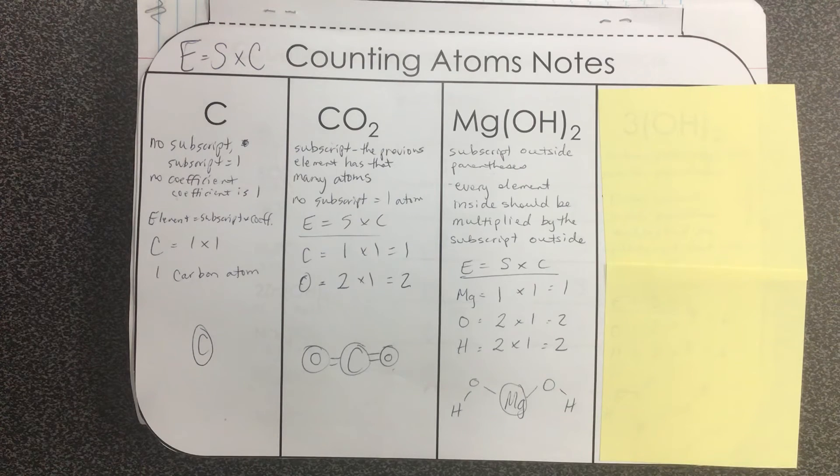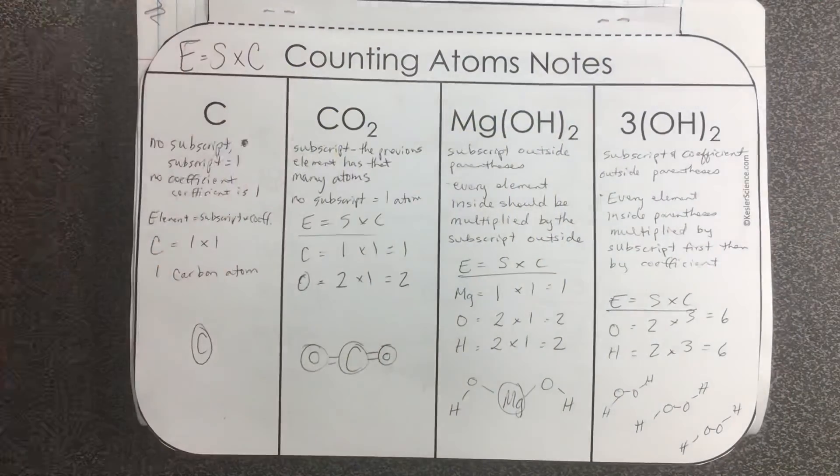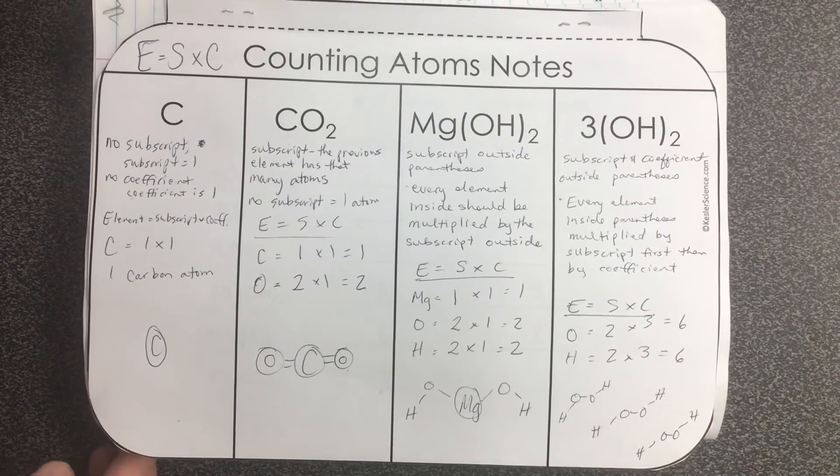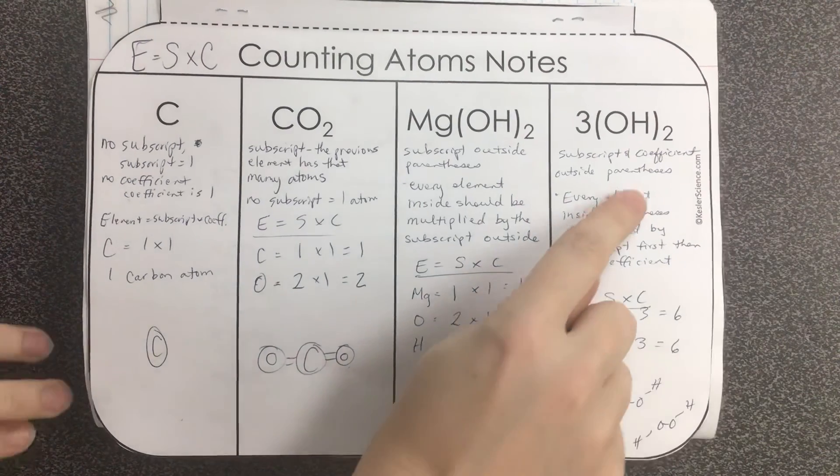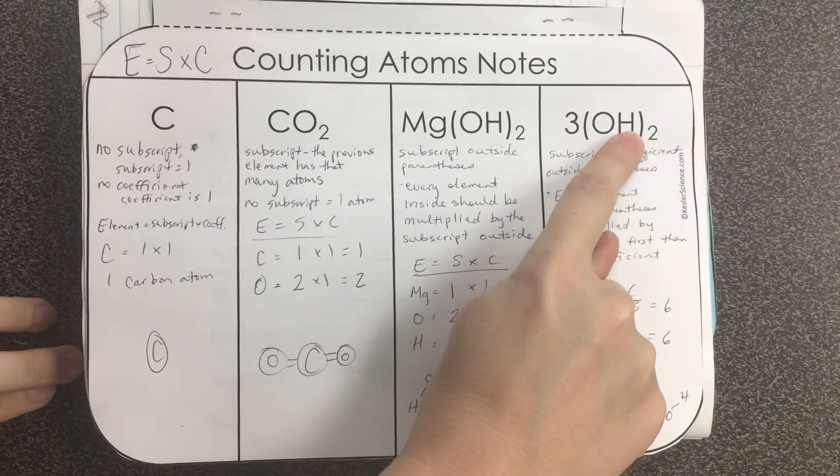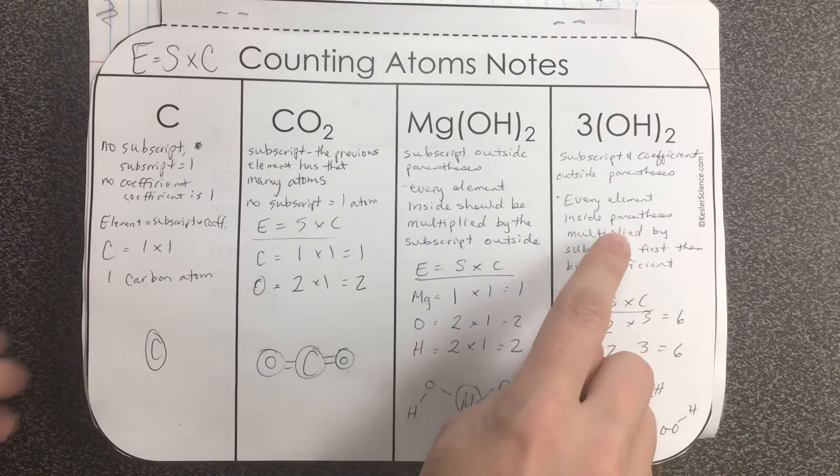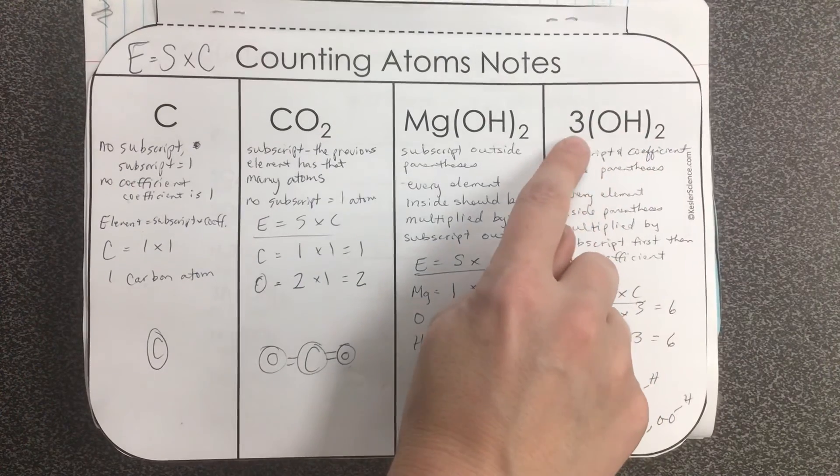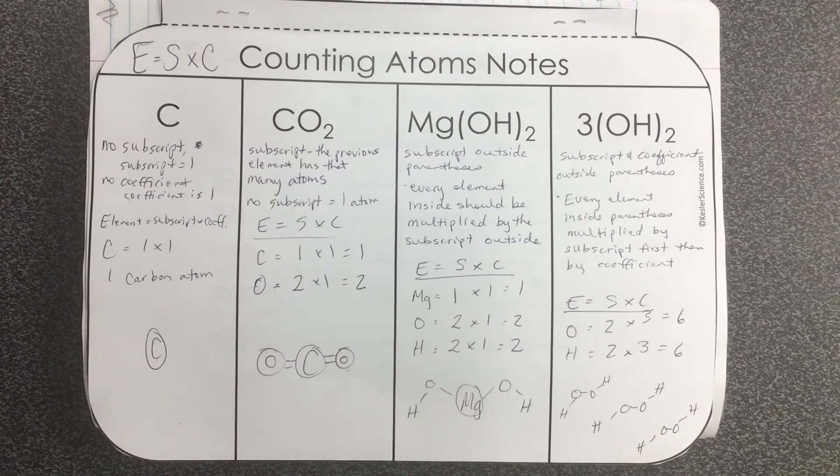In our final example we're going to look at what if we have both a subscript and a coefficient outside the parentheses. So if you have a subscript and coefficient outside, then just like before, every element inside the parentheses is going to have whatever the subscript says. Then you're going to multiply whatever is going on inside the parentheses by the coefficient second. The second that will apply next.